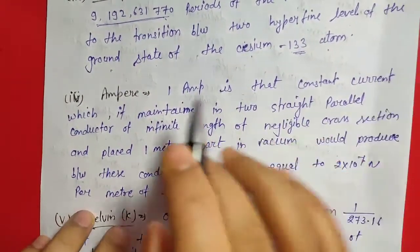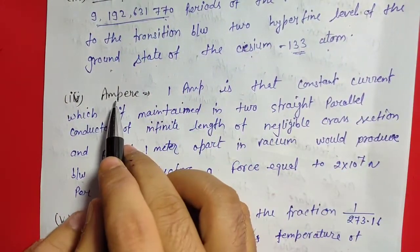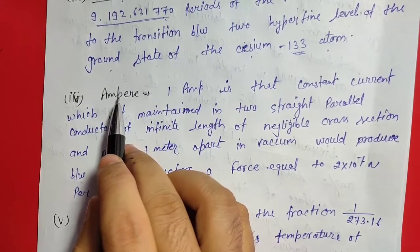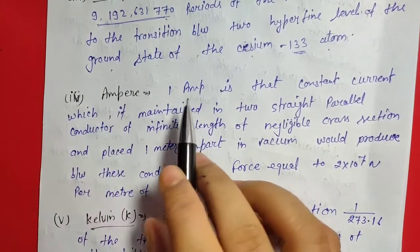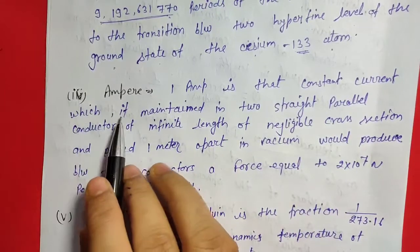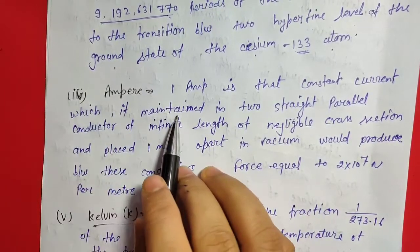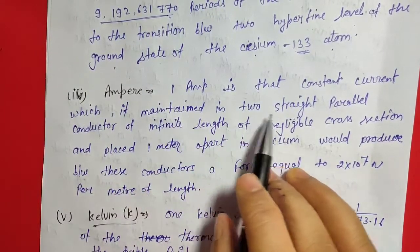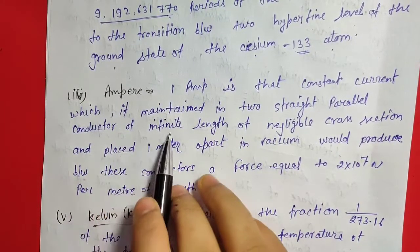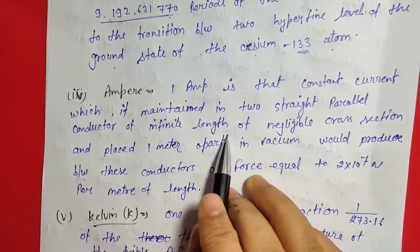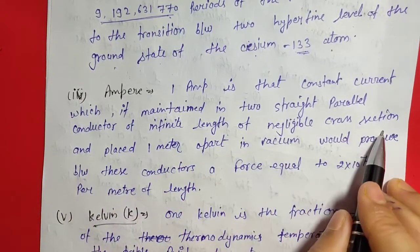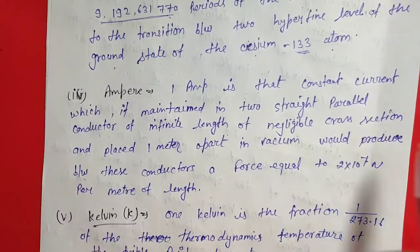Next, one ampere. Ampere is a unit of electric current. One ampere is that constant current which is maintained in two straight parallel conductors of infinite length and negligible cross-sectional area.